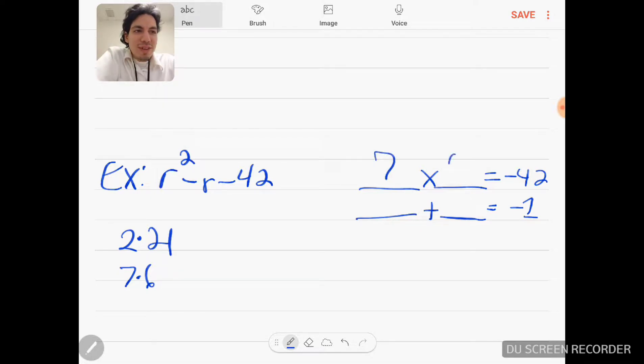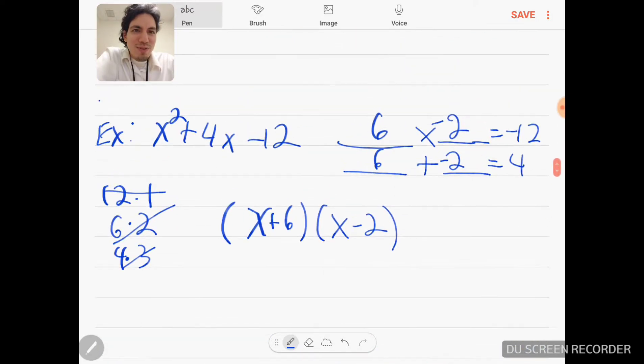So if I use 7 and 6 and let's say I made 7 negative, that will be the answer, because negative 7 times 6 would give me negative 42, and when I add these two I'm left with negative 1. So therefore (r - 7)(r + 6) as my factors. Okay, let me scroll up real quick.